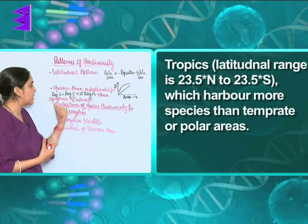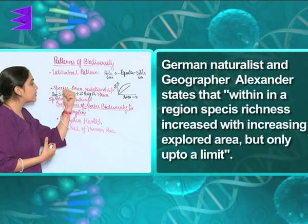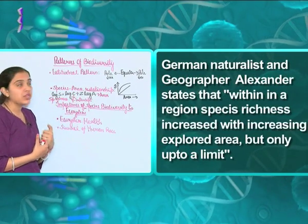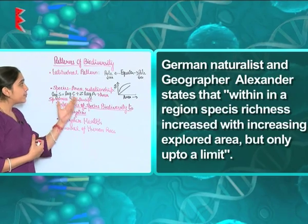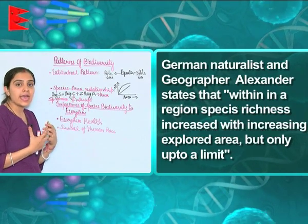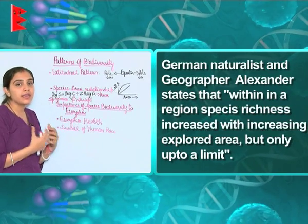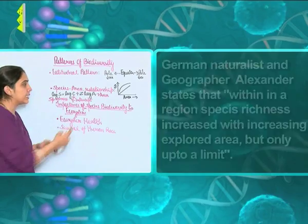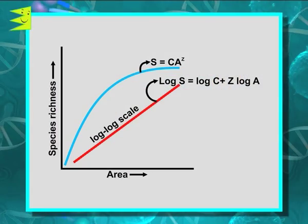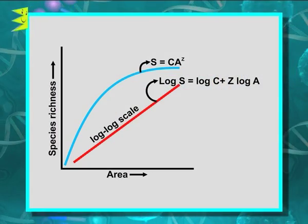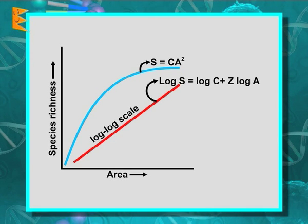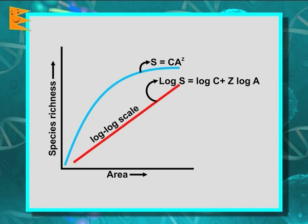In the species-area relationship, it is believed that biodiversity increases as the area increases. This is plotted in a graph of species versus area, described by the equation: log S = log C + Z log A.